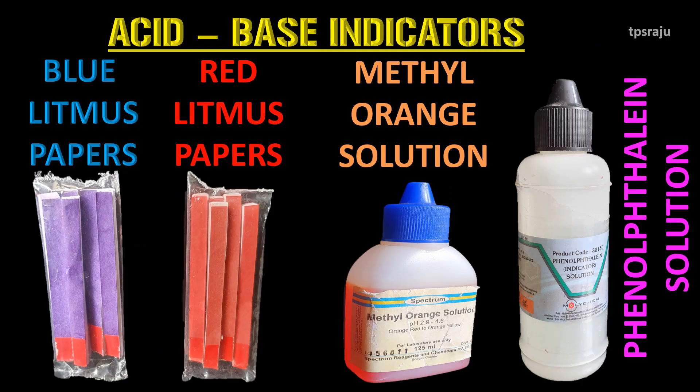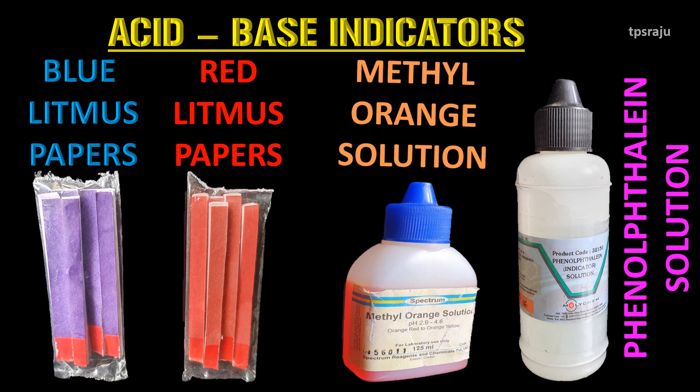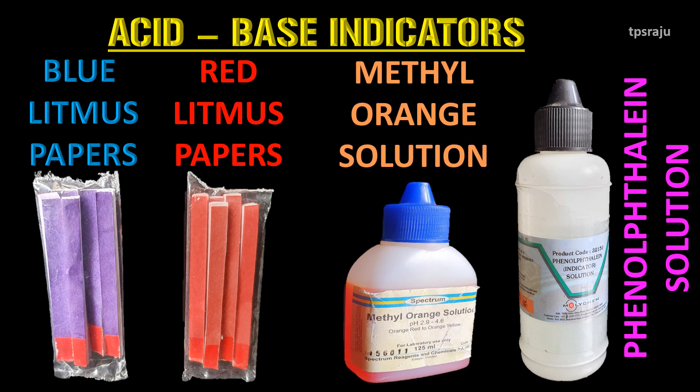Indicators help us to identify whether a substance is either an acid or a base. Acid-base indicators are dyes or mixtures of dyes. They are blue litmus paper, red litmus paper, methyl orange solution, and phenolphthalein solution.